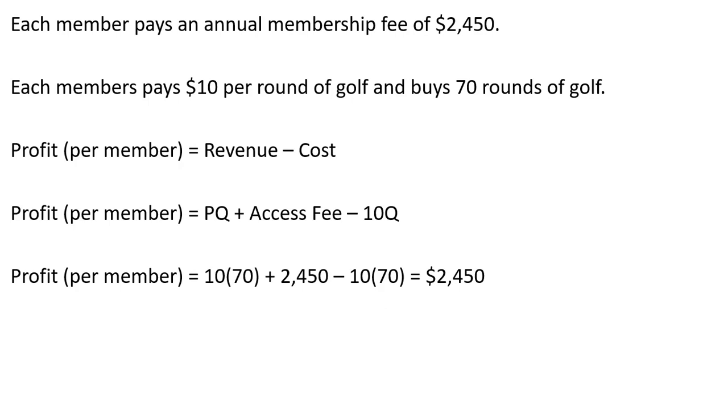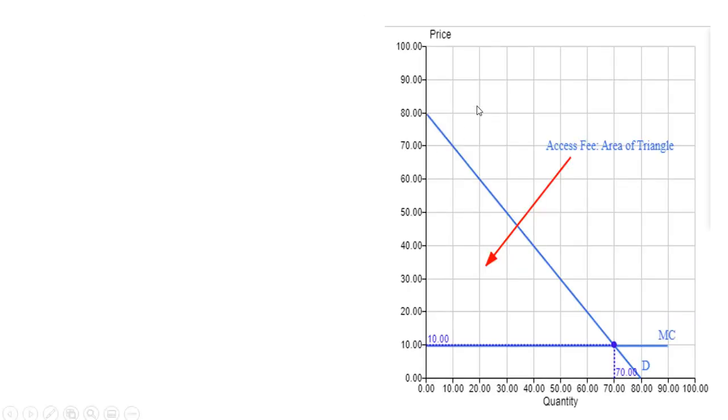Now let's look at this graphically. Here is the graph of the inverse market demand. So each member has a demand curve that looks exactly like this. Notice the vertical intercept is 80, or the demand choke price is 80. Anyways, the price equals marginal cost. And at a price of $10, consumers buy 70 units. And the access fee is just this area of this triangle right here that we already solved for, $2,450.